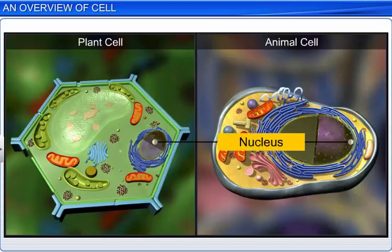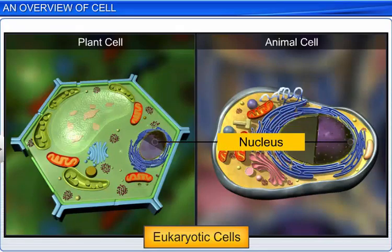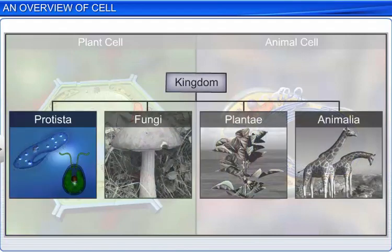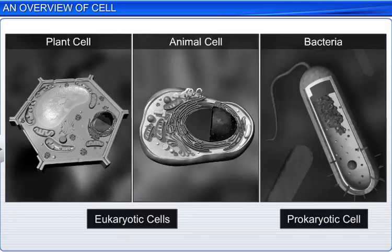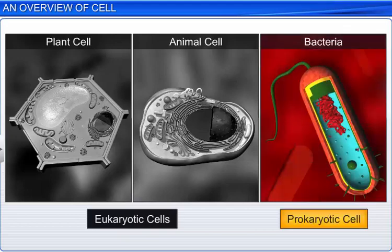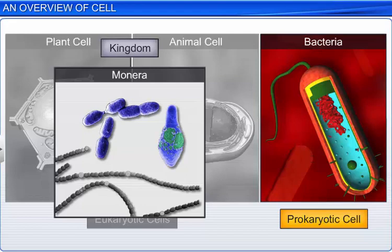If the nucleus is membrane bound, then the cell is called a eukaryotic cell. They are found in members of kingdom Protista, kingdom Fungi, kingdom Plantae, and kingdom Animalia. On the other hand, cells without a membrane bound nucleus are called prokaryotic cells, and members of kingdom Monera possess such cells.